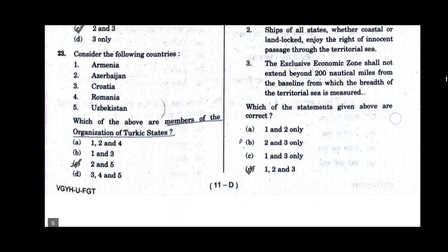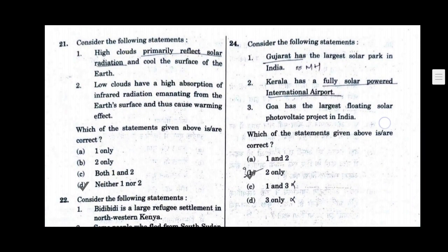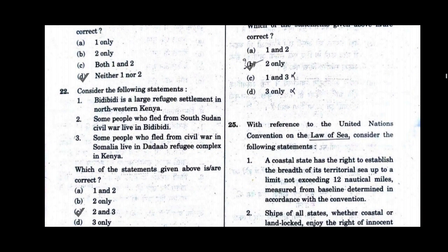The other three are Christian-majority economies. Question number 24. Consider the following statements — Gujarat has the largest solar park in India; Kerala has a fully solar-powered international airport; Goa has the largest floating solar photovoltaic project in India. Which of the statements given above are correct? Option B is the correct answer: Kerala has a fully solar-powered international airport.